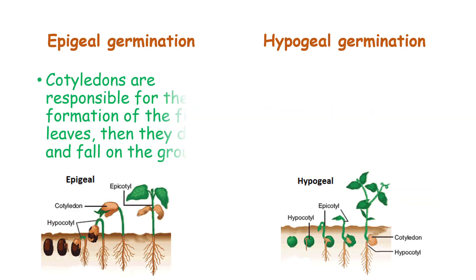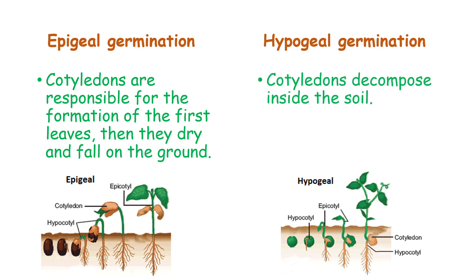In epigeal germination, the cotyledons are responsible for the formation of the first leaves, and then they dry and fall on the ground. In hypogeal germination, the cotyledons decompose inside the soil.